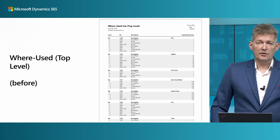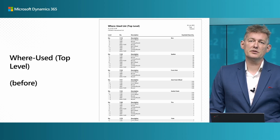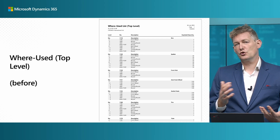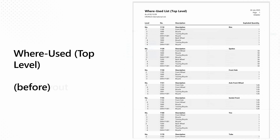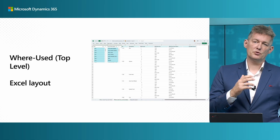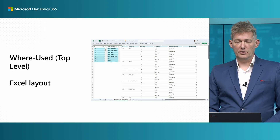Here is one example: the 'where used top-level' manufacturing report. What you see here is the legacy layout for that report — it just gives you a PDF with no navigation, sorting, or filtering ability. With the new version, we kept the report and just added a second layout, which is an Excel layout. With this, you get all the capabilities of Excel, so you can filter and sort. It also has a printable worksheet in the workbook, so if you really want to print, you can do it there. And you can take this layout, make it your own, and upload it using Excel.